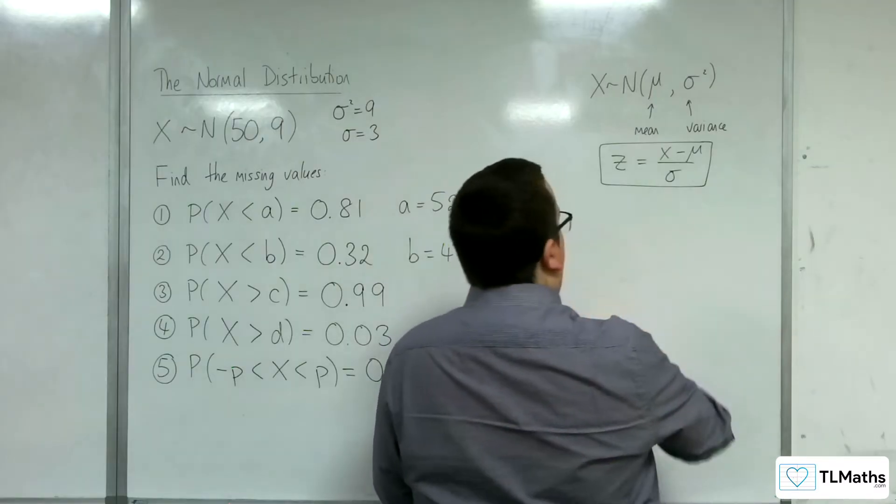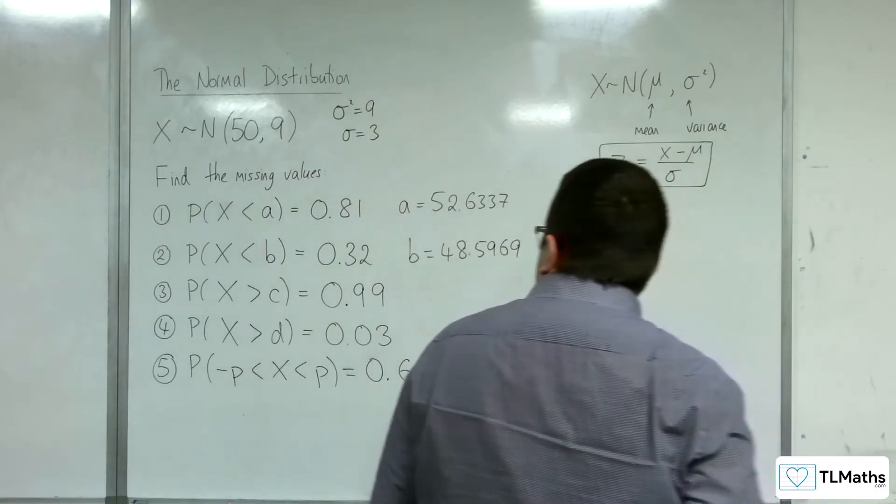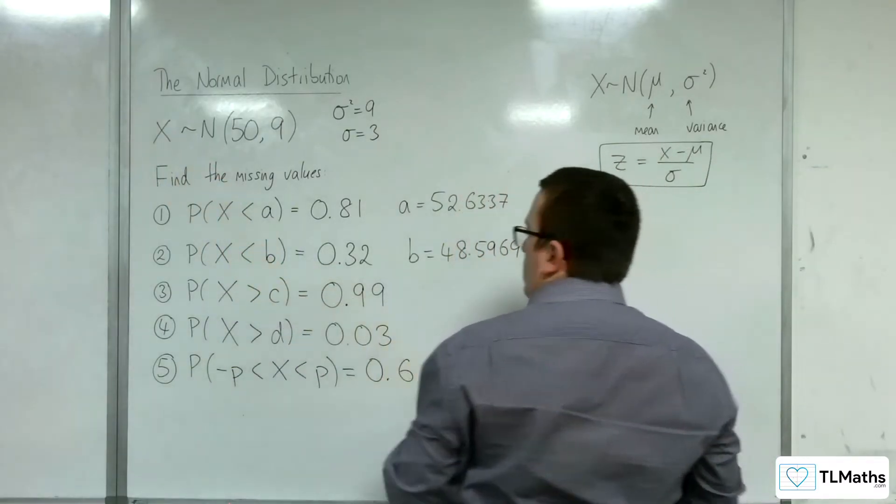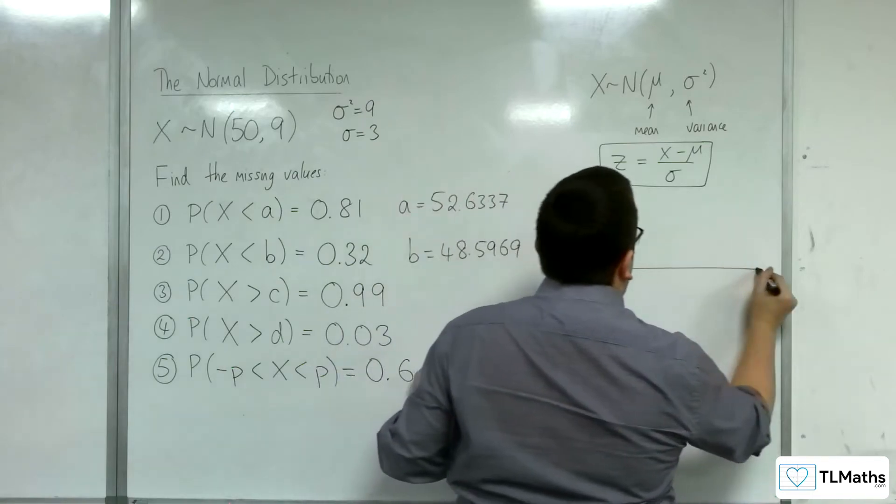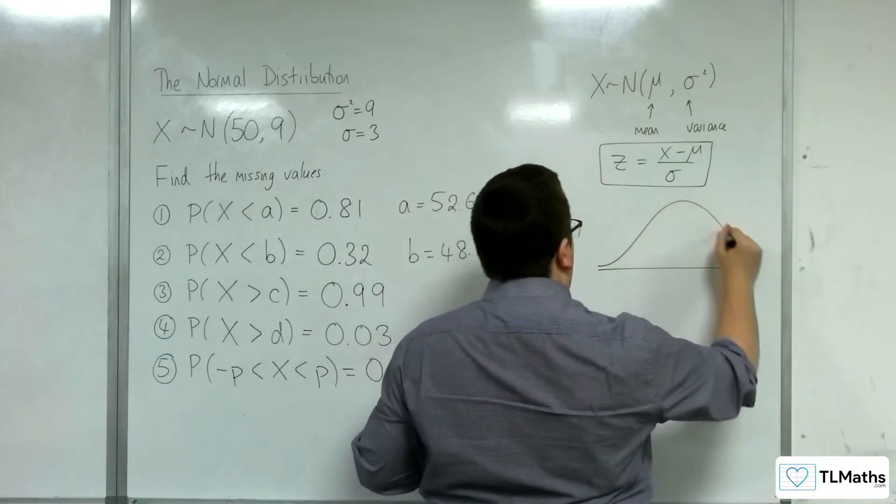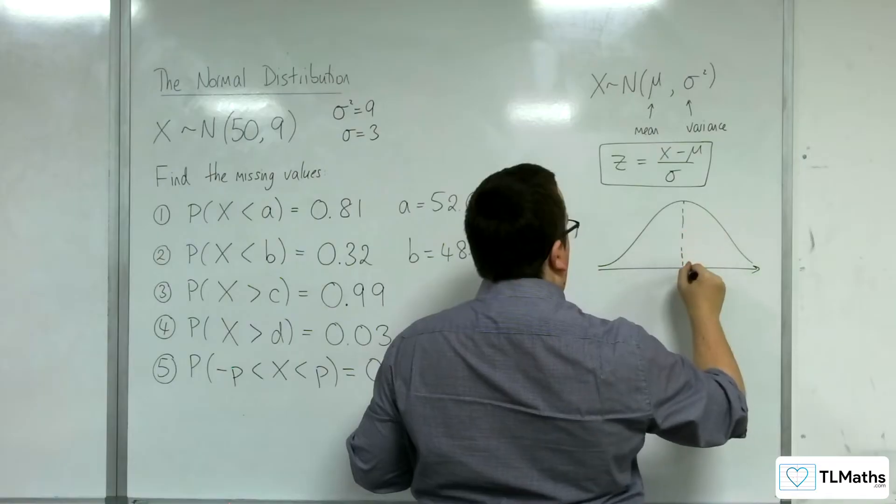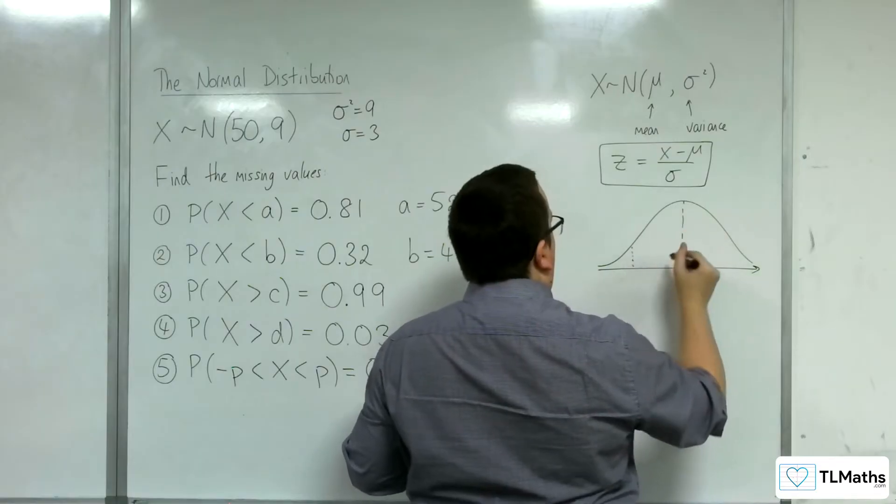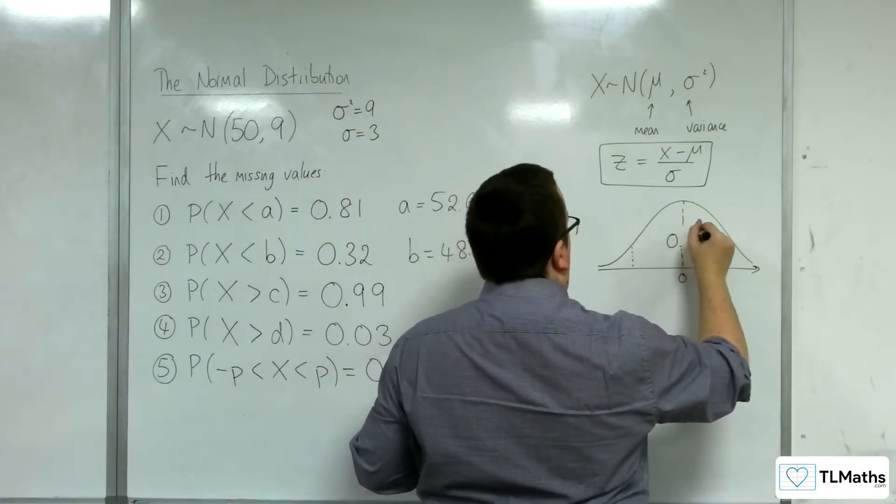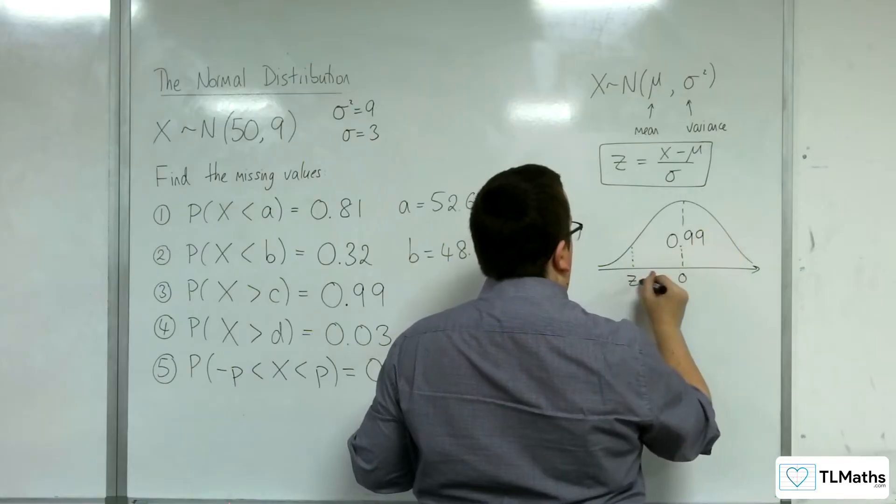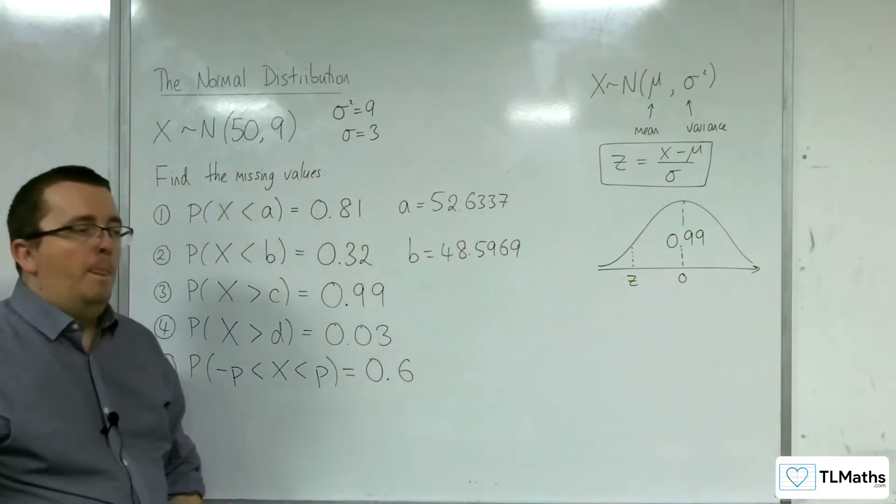Well, that's number two. Right, number three. The area to the right is 0.99. So that area is 0.99. That's the z value I need.